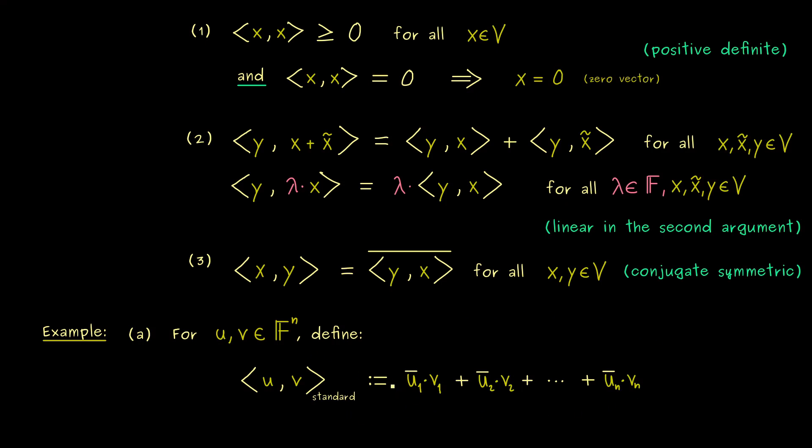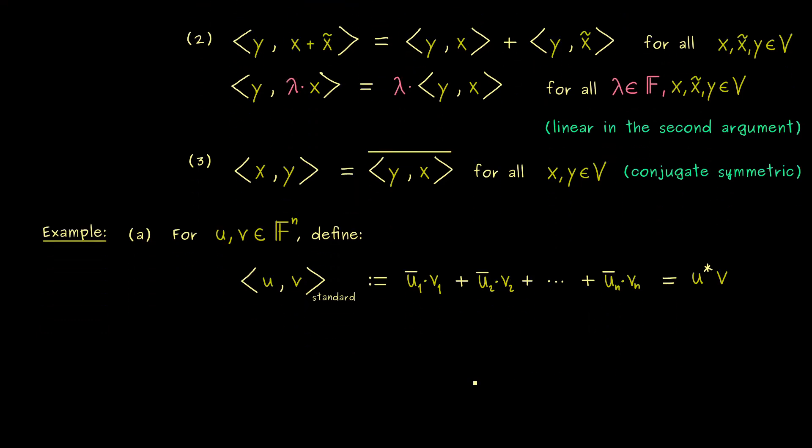So, when you see this nice formula for the standard inner product in F^n, you might recall, that we can also express it with a matrix product. In particular, if you see u and v as column vectors, then u star is a row vector. And if you multiply it with the column vector v as a matrix product, we get out a scalar. And now you should see, the scalar result is exactly our inner product of u and v. Therefore, you can always remember the standard inner product with this definition as u star v. So it's a very nice formula and easy to use. And soon we will see, that we can also generalize that to other vector spaces.